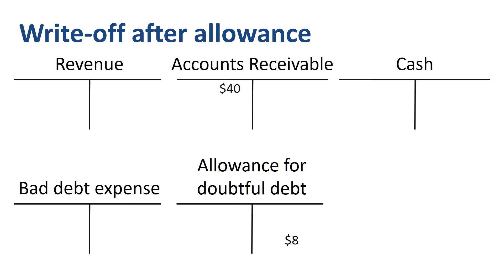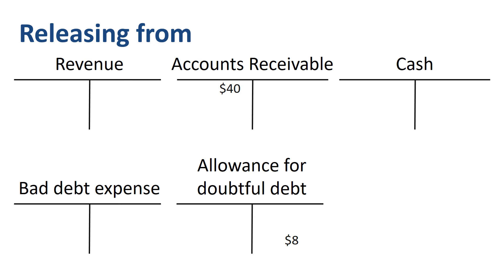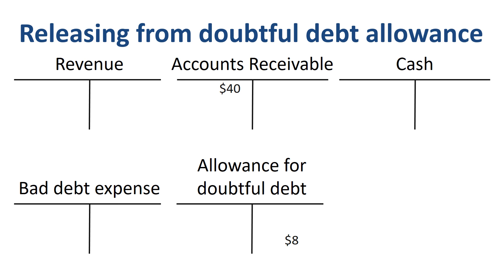If a larger customer goes bankrupt and the allowance for doubtful debt is not sufficiently high to cover the full amount, then $8 of the $10 gets debited to the allowance, and the remaining $2 has to go to bad debt expense in the P&L. The opposite could also occur: if the allowance for doubtful debt is not at all or only partially needed to cover actual write-offs, then management could decide to release part of the allowance for doubtful debt back into the P&L as a credit to bad debt expense. The justification and calculation for taking such a step should be well thought through and documented.